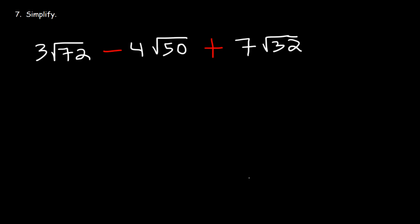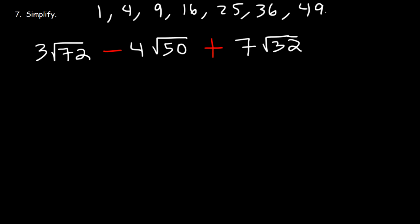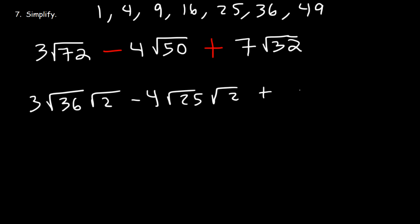Number 7. What is the value of 3 root 72 minus 4 root 50 plus 7 root 32? It helps to know the perfect squares: 1, 4, 9, 16, 25, 36, 49, and so forth. The highest perfect square that goes into 72 is 36, so break down 72 as 36 times 2. 25 goes into 50 — 25 times 2 is 50. And 16 goes into 32 — 16 times 2 is 32.